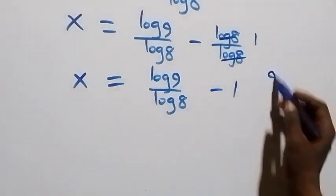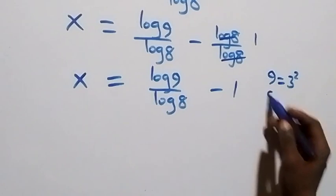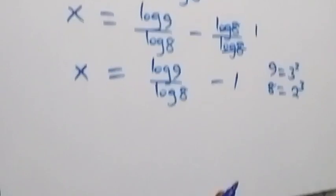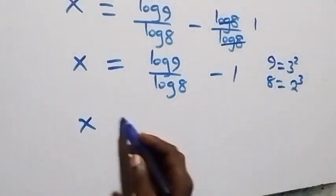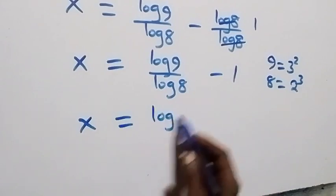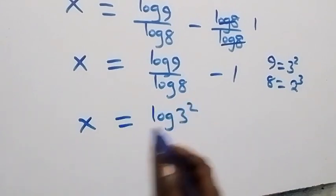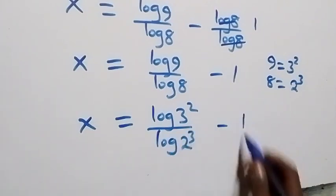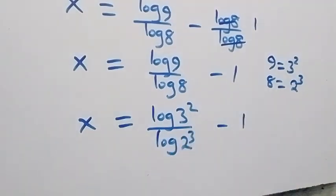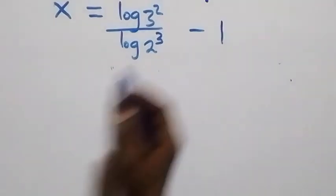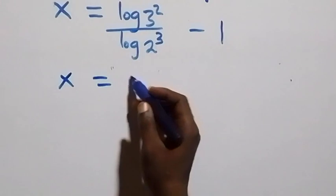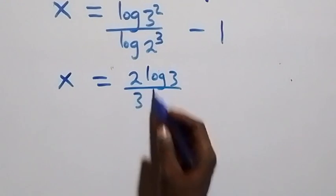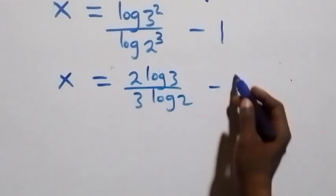Here we can write 9 as 3 times 3, which is 3 squared, and 8 as 2 times 2 times 2, which is 2 raised to power 3. So this becomes x equals log(3 squared) over log(2 raised to power 3), minus 1. We apply the power law of logarithm again, and we have x equals 2 log 3 over 3 log 2, minus 1.